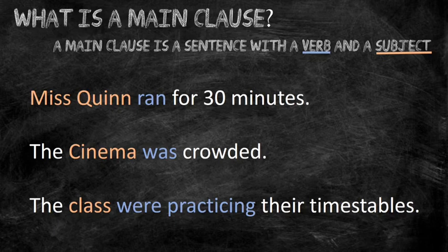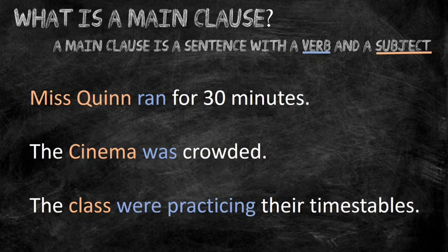The cinema was crowded. The subject of the sentence is the cinema — it is the thing we are talking about — and the verb in the sentence is was. The last sentence: the class were practicing their times tables. The subject is the class, and the verb is were practicing. So a main clause is the part of the sentence that makes sense on its own.